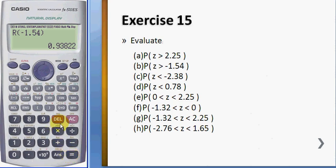And for c, you use Shift 1, 7, distribution. This one is less than area, so we use P. Enter negative 2.38, and this equals 0.0086.